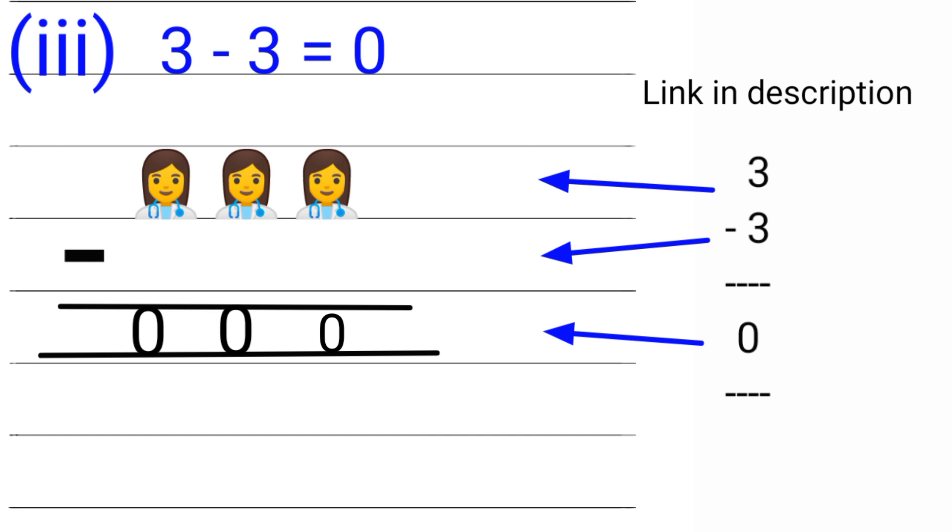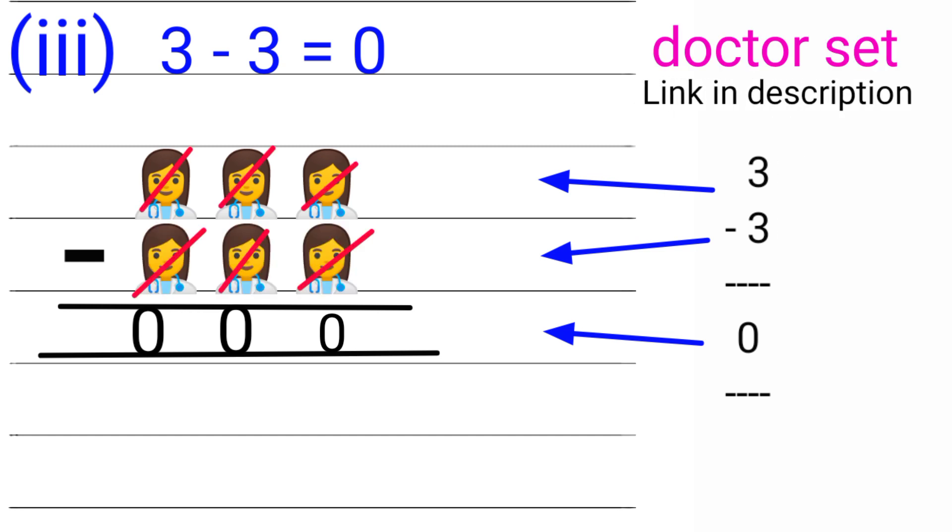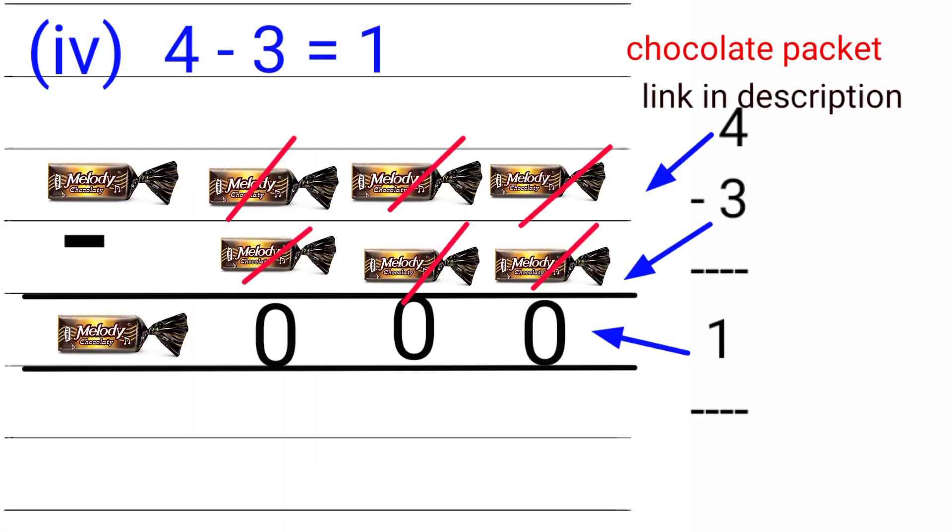Third one is 3 minus 3. Look at here, the doctors are there, three doctors are there. Three doctors went for a leave, so how many doctors are there to look after the patients? No one is there, so the answer is zero. 3 minus 3 equals 0.